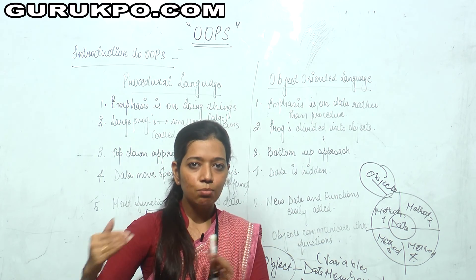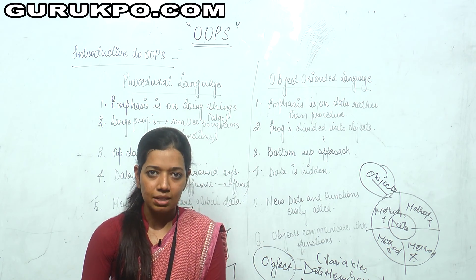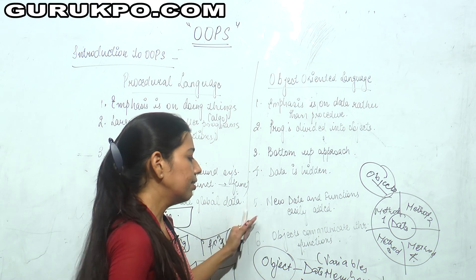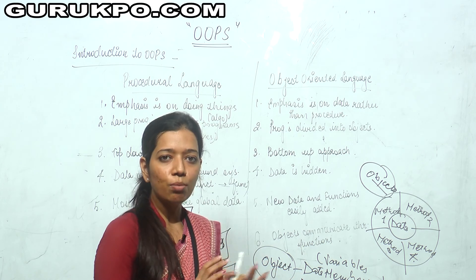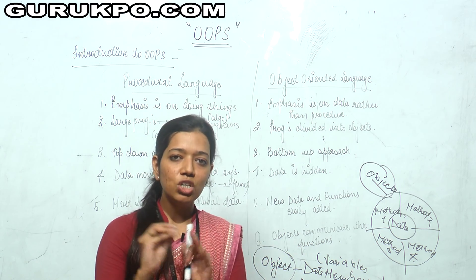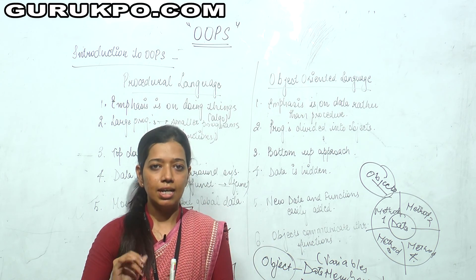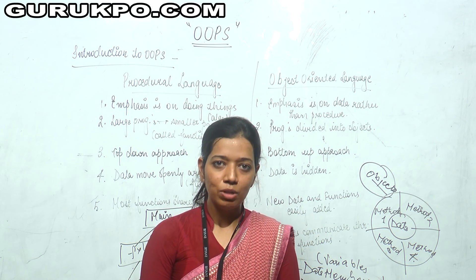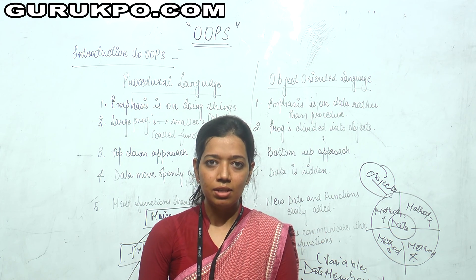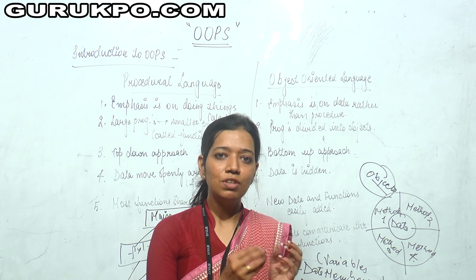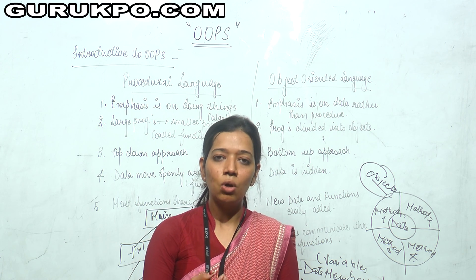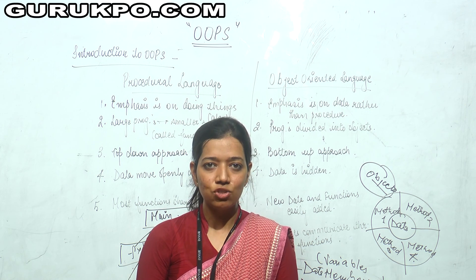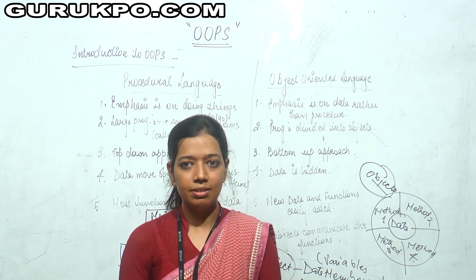In the future we will learn further characteristics. The first characteristic is the class, and the second is the object — without object, object-oriented programming language doesn't exist. This was just the introduction about object-oriented programming language that we are going to study further. The features and characteristics of object-oriented programming language I will be imparting in the next lecture. Thank you for today, have a nice day.